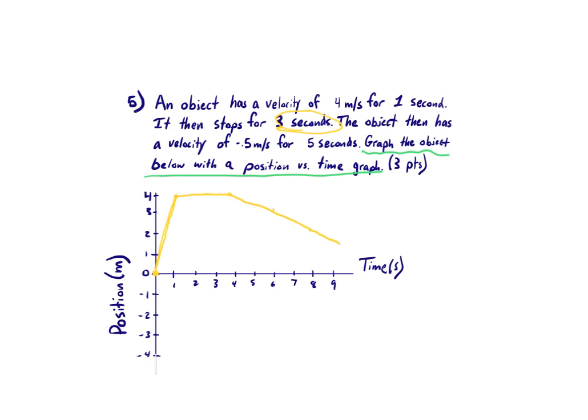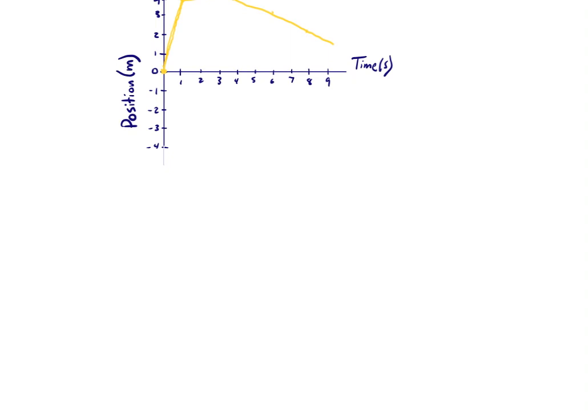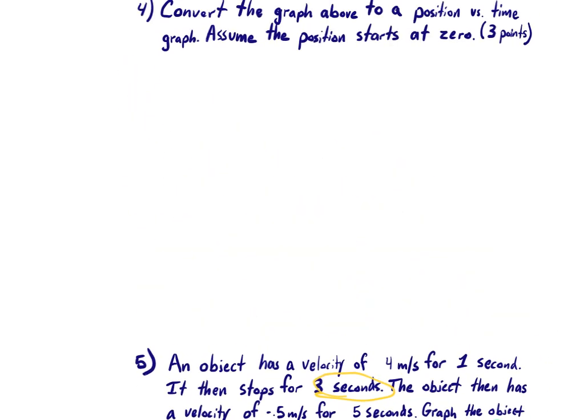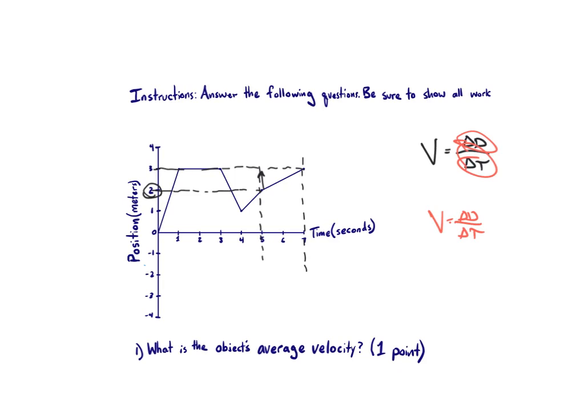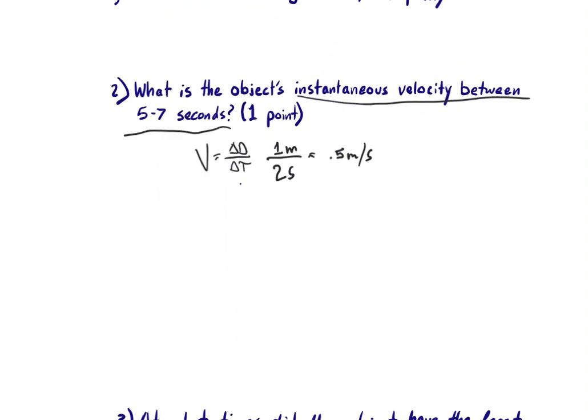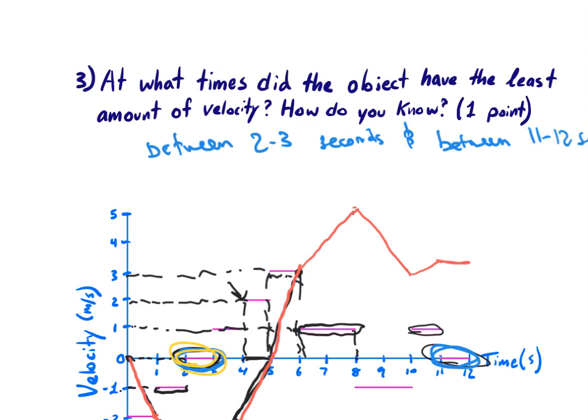The key takeaways from this lesson: average velocity is the total displacement — the final position — divided by the total change in time. Instantaneous velocity looks at a small snapshot between two specific times that are given. A position-time graph shows where the object is located relative to the origin over time. A velocity-time graph shows how fast the object is moving over time.